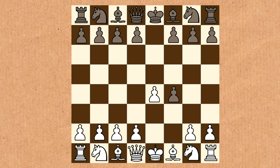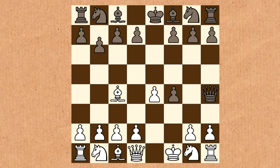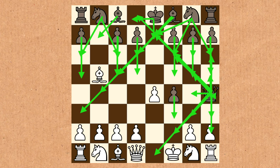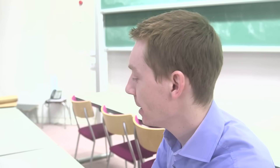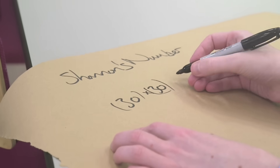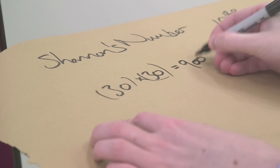How did he come up with this massive figure? He looked at some games of chess and said that on average, at any position, there are about 30 legal moves you can make. The first player would have 30 legal moves, and for each of those, the second player would also have 30. So if it was only two moves, it'd be 30 by 30 — that's 900 already with just two moves.